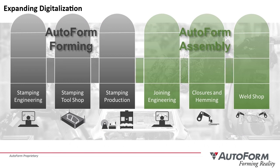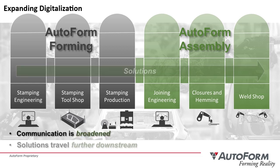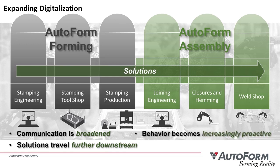AutoForm Assembly helps bridge the manufacturing organization, allowing collaboration between the part makers and product assemblers. As a result, communication becomes broader, solutions can travel downstream, creating human behavior that is increasingly proactive. Finally, the focus starts to become product-based, looking beyond just the single parts.